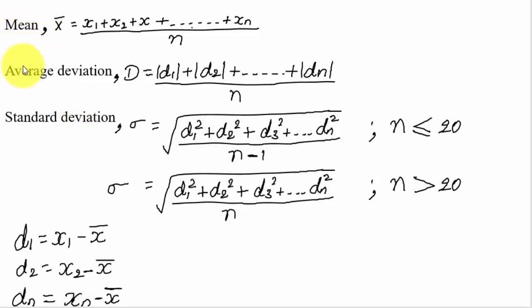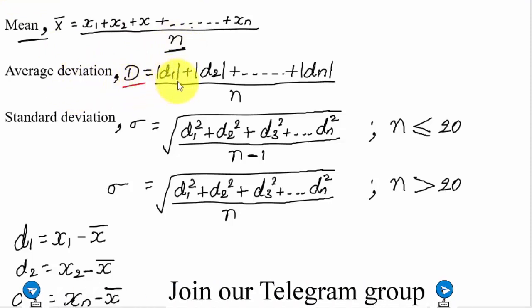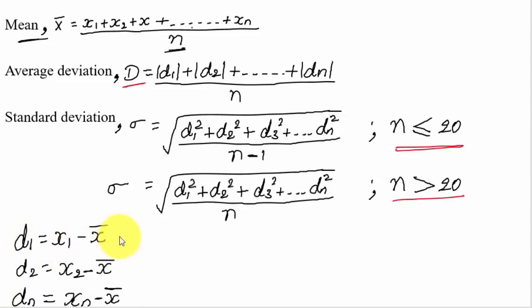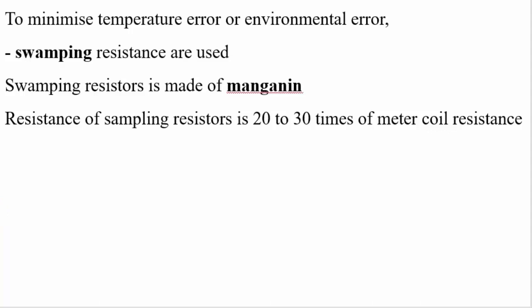For the problematic/calculation part — important for engineering service exams: mean or average is the sum of observations divided by total number of observations. Average deviation D is given by (|d1| + |d2| + ... + |dn|) / n. For standard deviation: if n ≤ 20, one formula applies; if n > 20, a different formula is used. Here d1 = x1 − x̄, d2 = x2 − x̄, dn = xn − x̄, where x̄ is the mean.